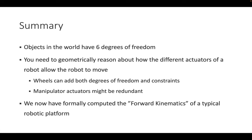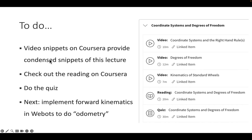In summary: objects in the world have six degrees of freedom unless constrained, typically three on the plane. You need to geometrically reason about how actuators allow motion to determine actual DoF. You'll develop intuition to count motors, but edge cases require writing down equations and counting distinct solutions. We have formally computed the forward kinematics of a typical robotic platform common in service robotics. Next, please do the reading, complete the quiz on coordinate systems and degrees of freedom, and start implementing forward kinematics in Webots.